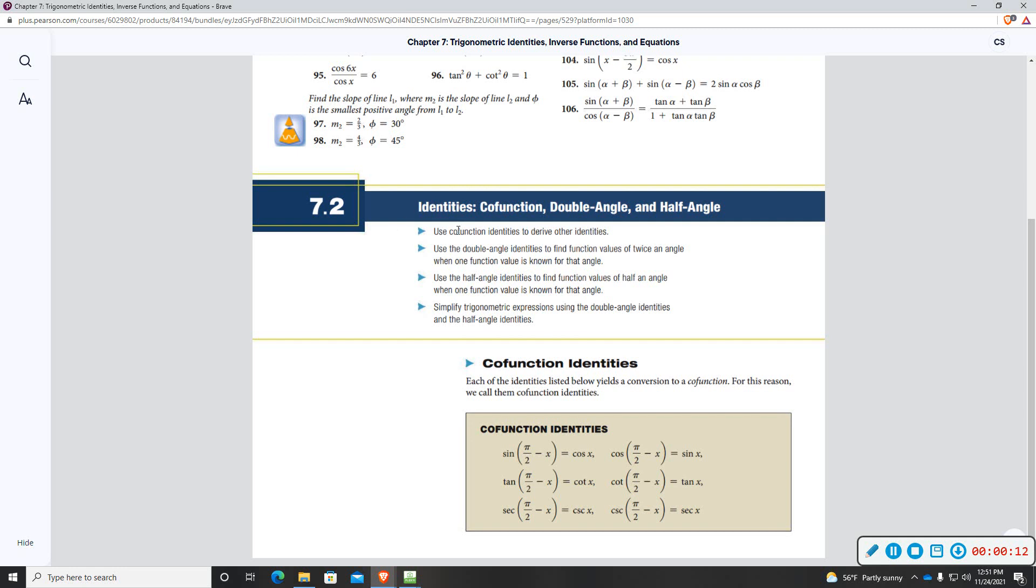Some of the objectives: we want to use co-function identities to derive other identities, use double angle identities to find function values of twice an angle when one function value is known, use half angle identities to find function values of half angles when one function is known, and simplify trigonometric expressions using double angle identities and half angle identities.